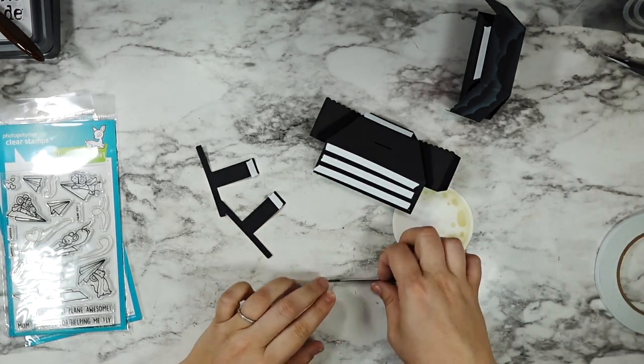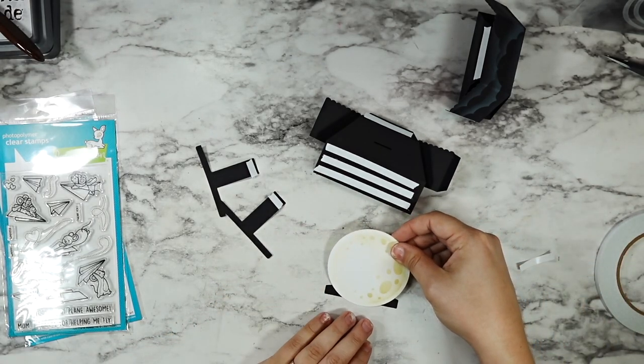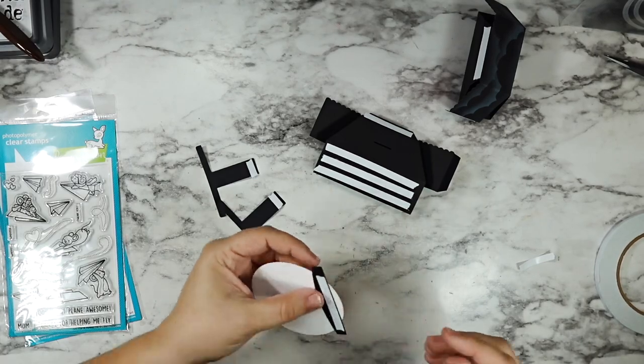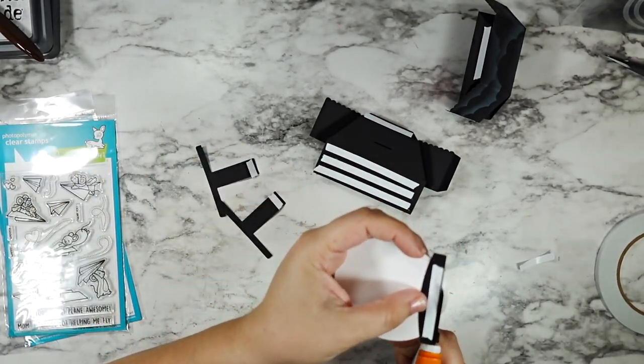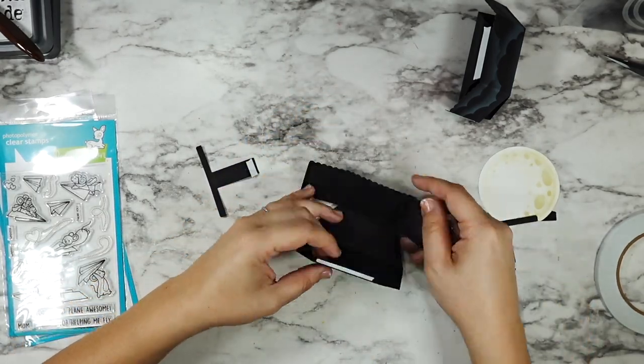So I added tape to the front and back. We're going to attach the moon to one side and I will trim off the excess from the bottom. This will help our moon to kind of look like it's rising up out of the clouds.